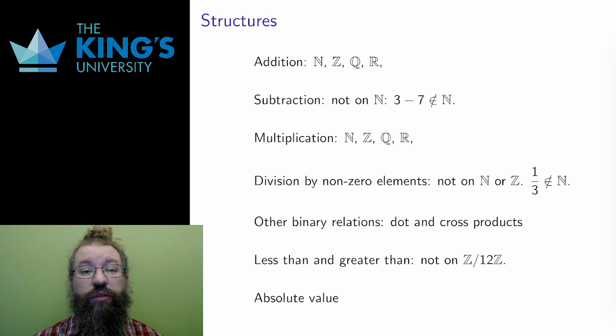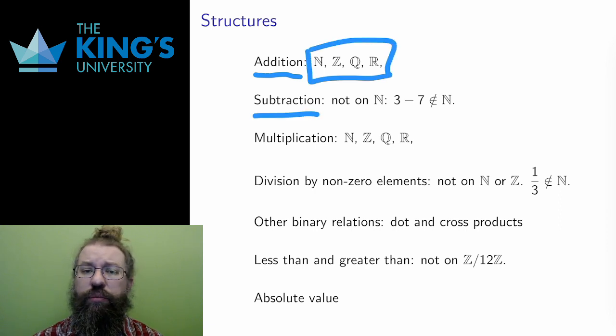Many sets have operations. These are structures. Addition is a structure on almost all of the number sets. Subtraction is a structure on most of them, but subtraction is not a structure on the natural numbers.